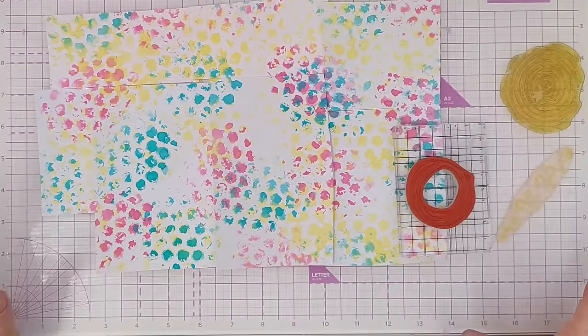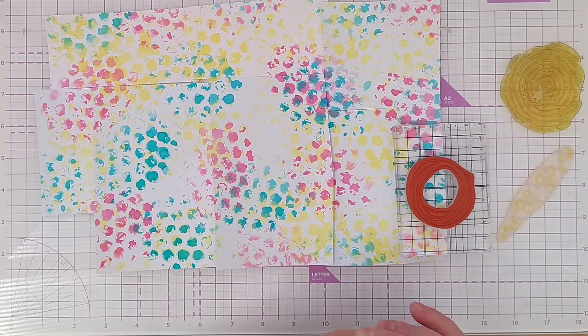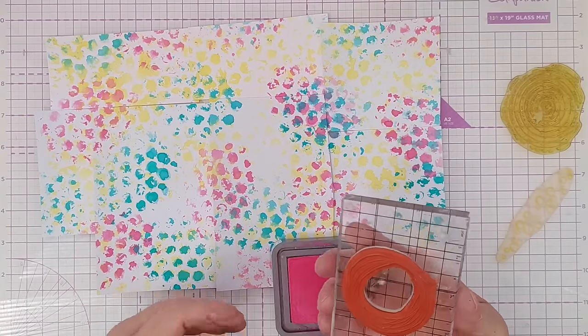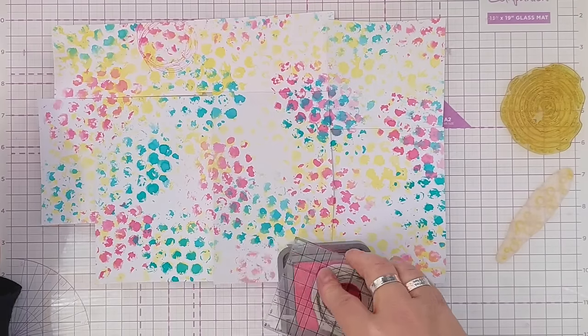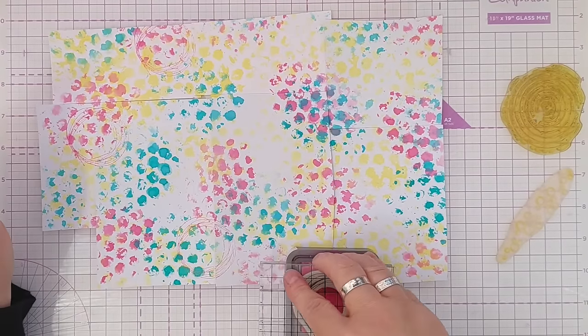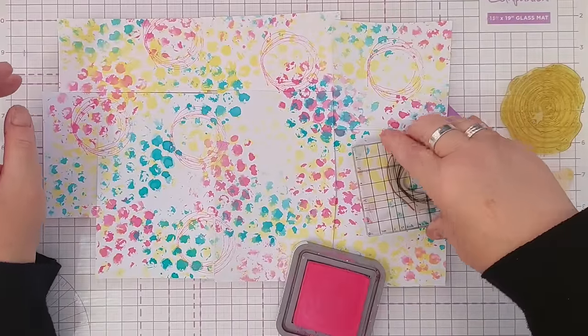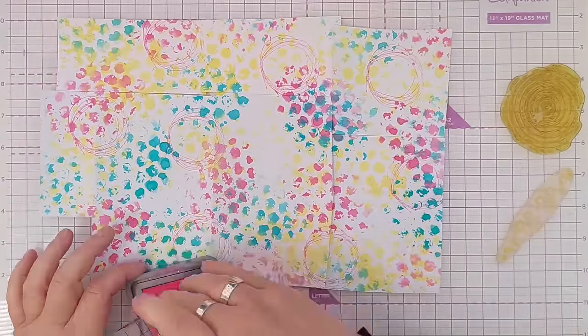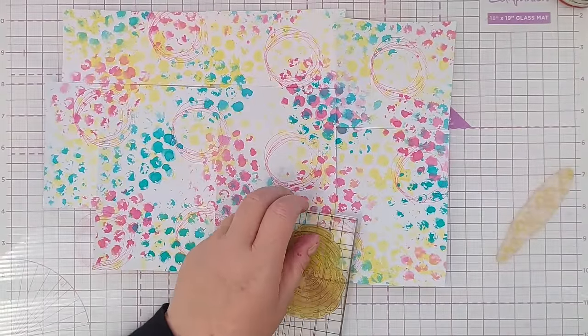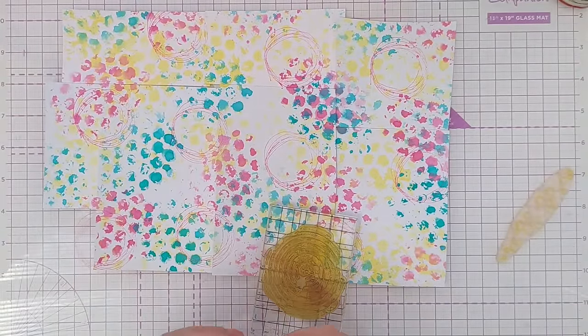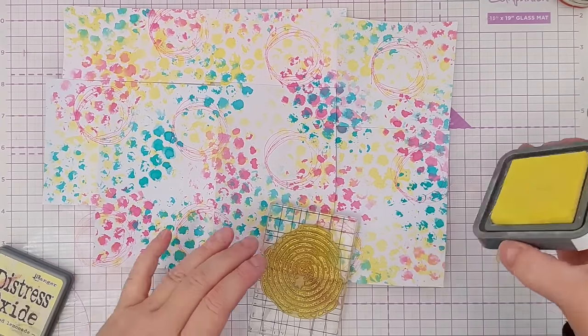I've got three stamps here each with a circular element to it and I'm going to stamp one in each color. So I'll use this one for the picked raspberry and dot that around. This one I think I'll do in yellow, in the squeeze lemonade. I'm not sure how well it's going to show up but it will be there.